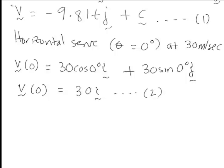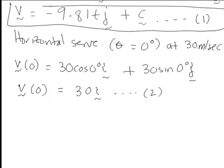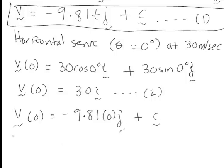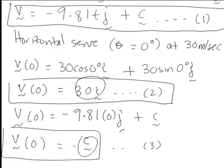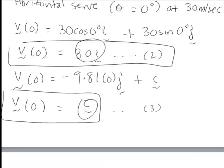We could also work out an equivalent expression for the initial velocity by simply substituting t is 0 into equation 1, which would give us v0 equals negative 9.81 times 0 times j plus constant vector c. That first bit is 0 so v0 is also the vector c. Therefore looking at equations 2 and 3 they're both expressions of the same thing v0, so we can equate their right hand sides to find that the constant vector c is in fact equal to 30i.